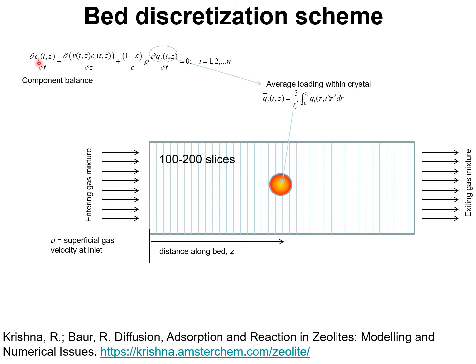The molar concentration C_i of each component in the gaseous mixture at time T and position Z is described by this partial differential equation. The term here, Q_bar, is the average loading within the crystal determined by integrating over the volume of the crystal.